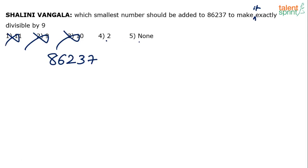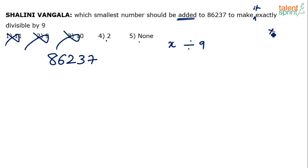Why is that? The number 86237 is not currently divisible by 9 — that's why we have to add something to it. Now, understand: by adding 11, you are actually adding 9 and then adding 2. Since we are talking about divisibility by 9, adding anything more than 9 shows that it cannot be the smallest number that should be added.